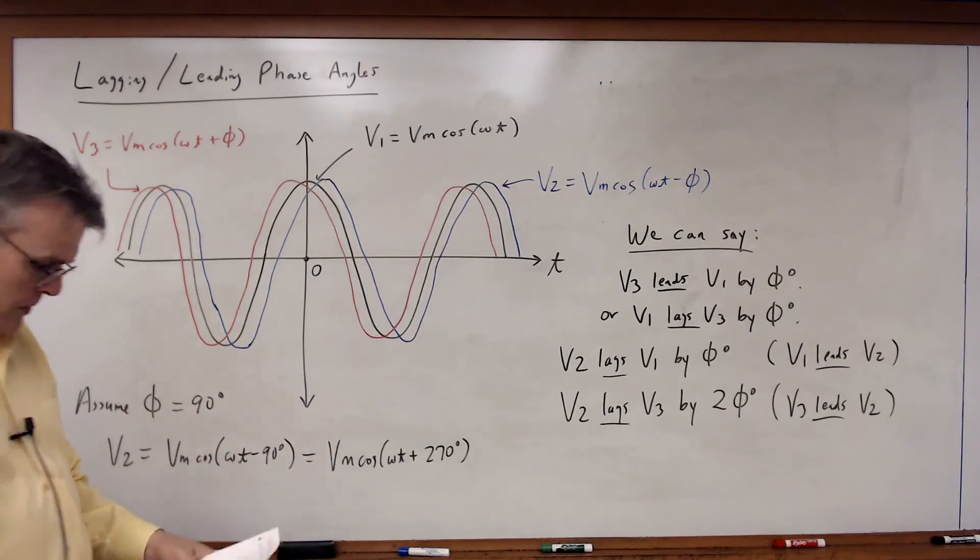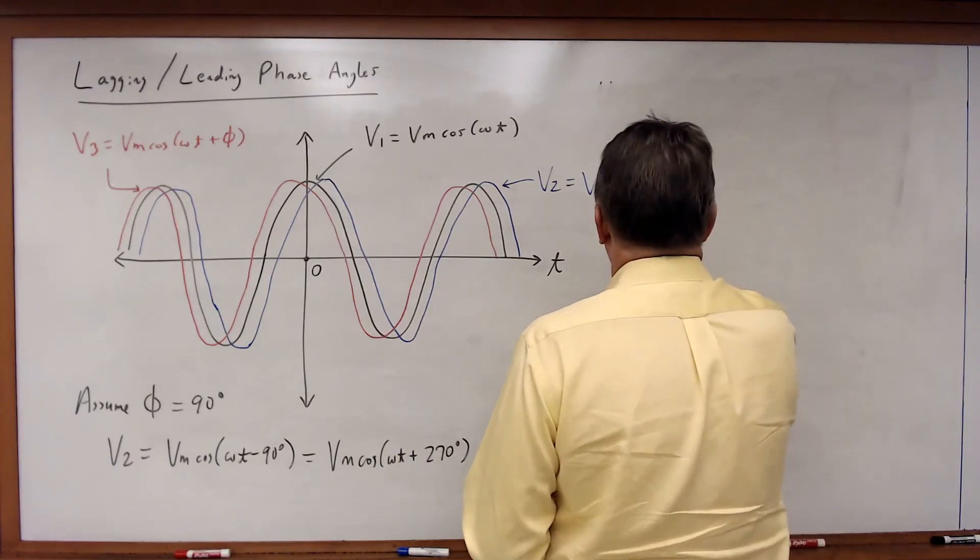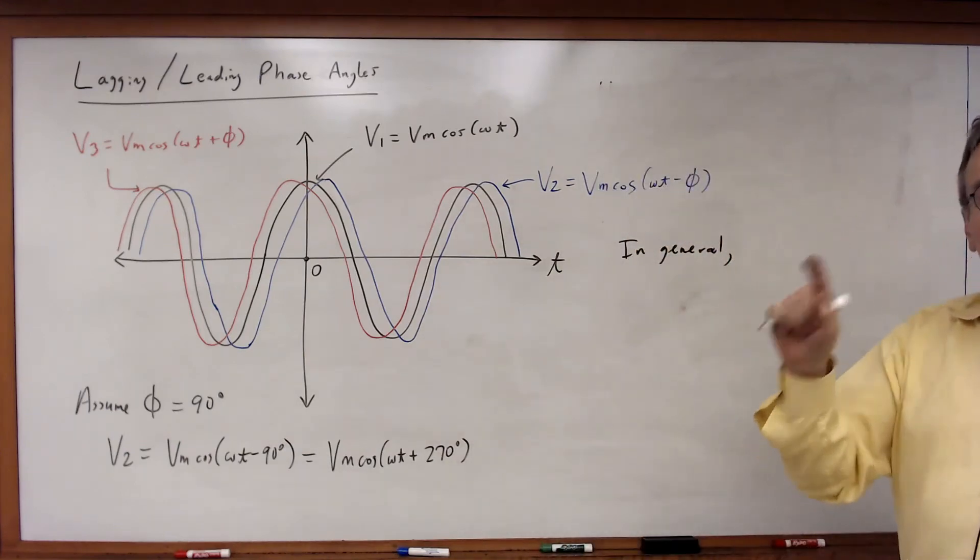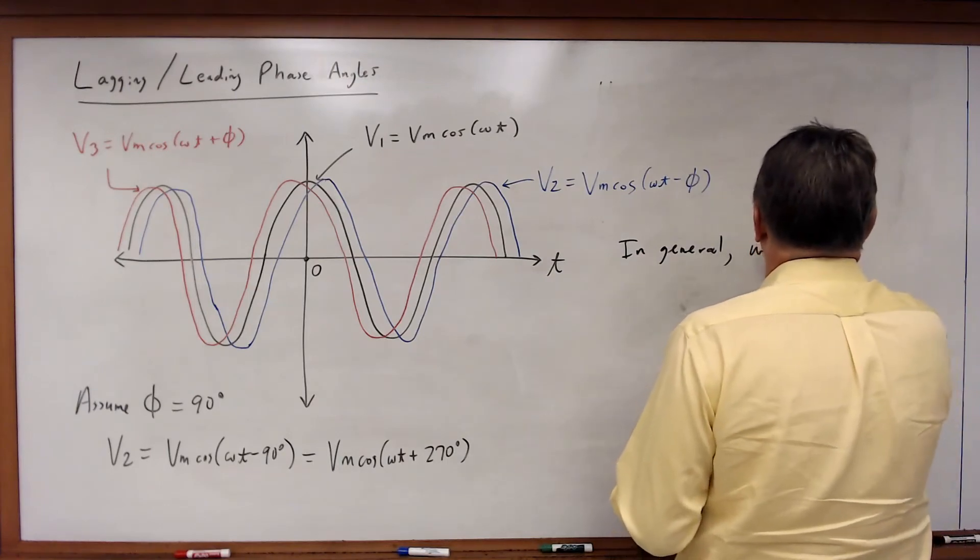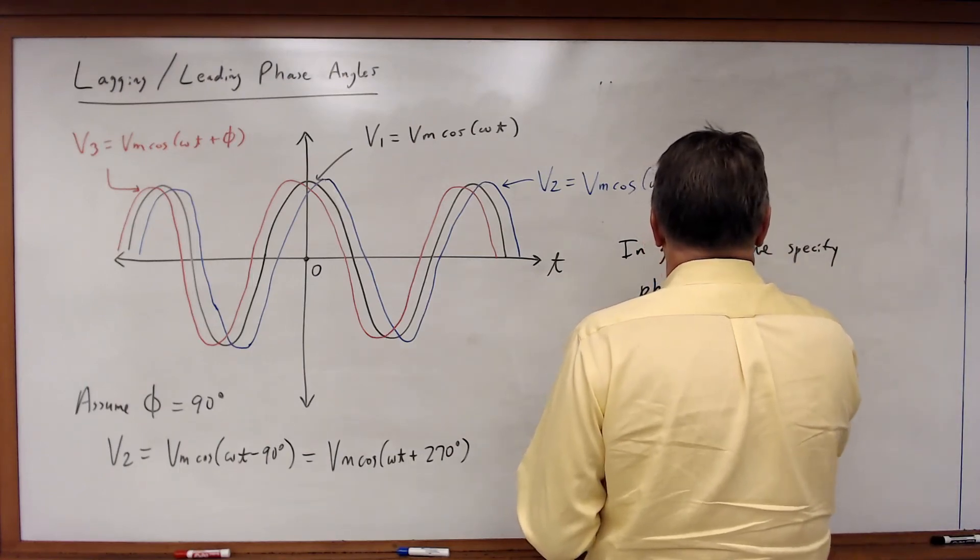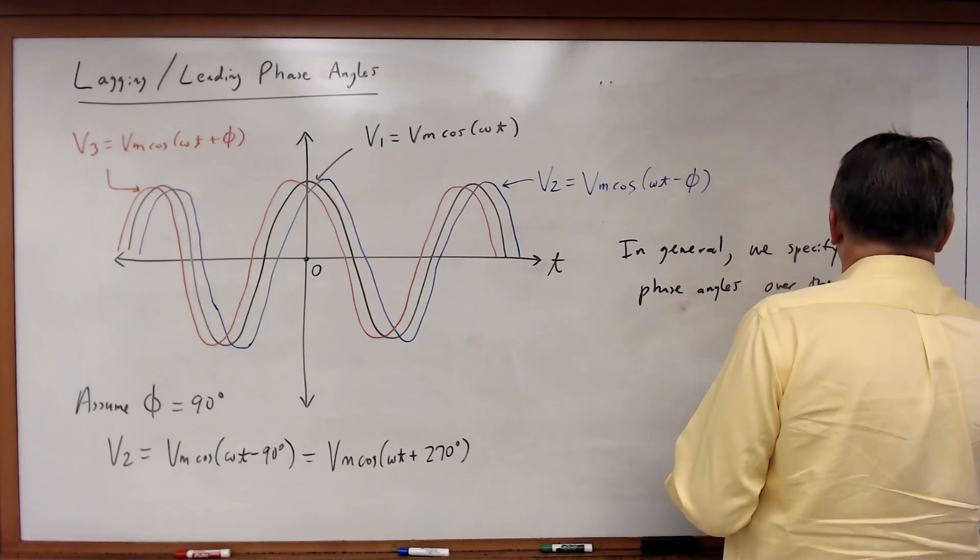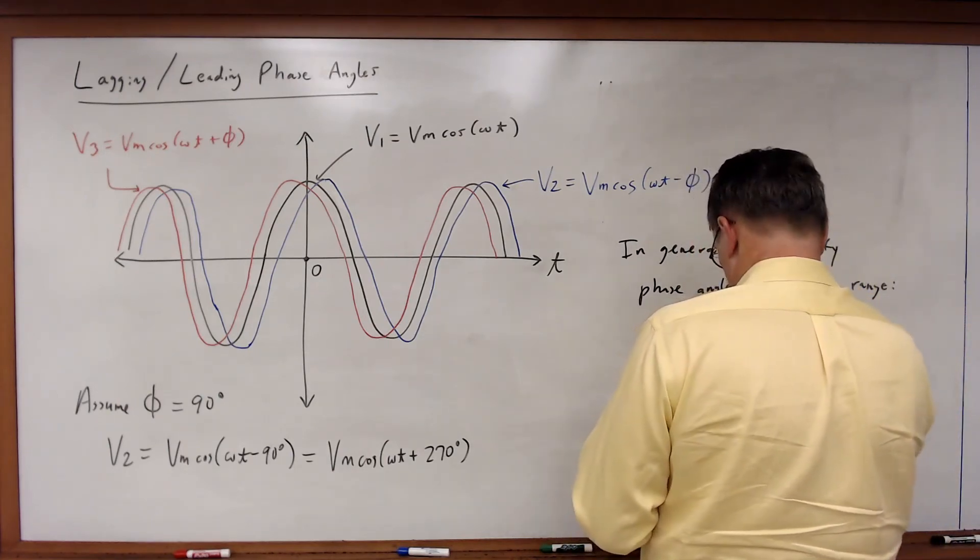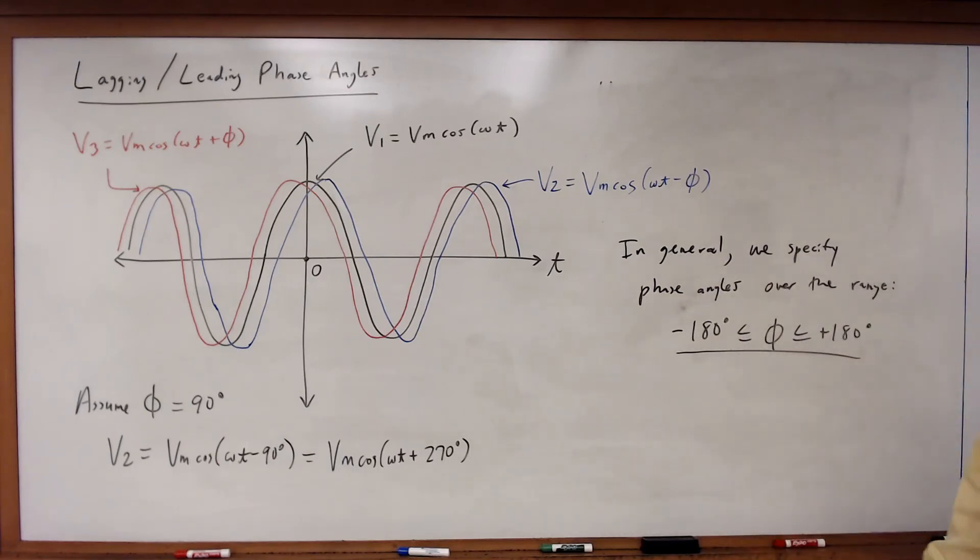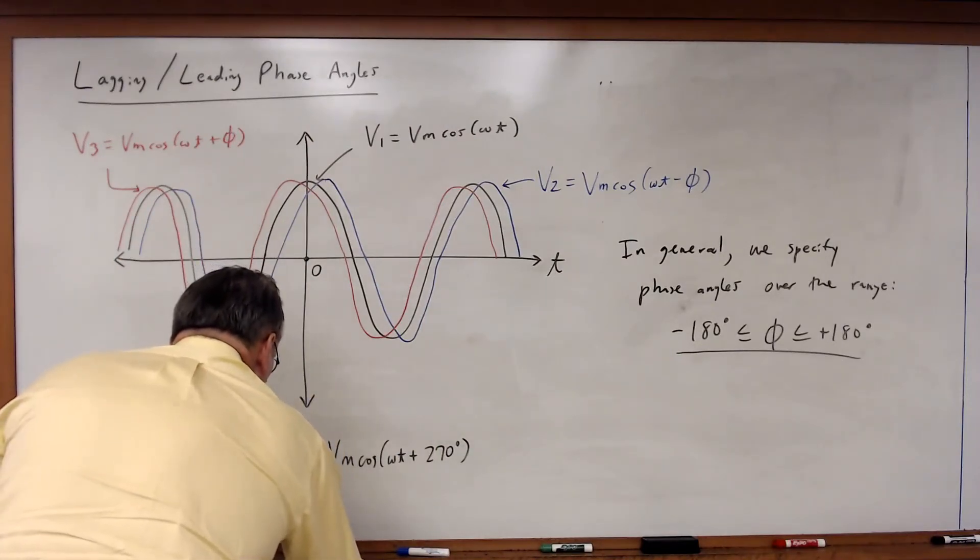If you could just arbitrarily add 360 degrees and flip leading to lagging or vice versa, then really we need to kind of limit our range of phase angles. So what we get is this: in general, we specify phase angles in the range of plus or minus 180 degrees. This is the convention.